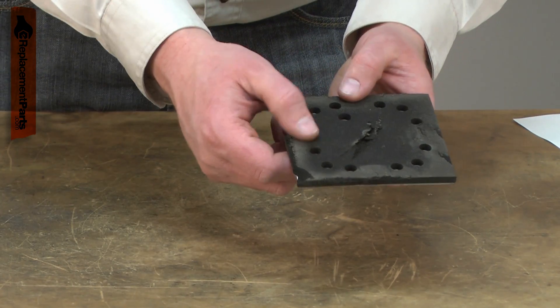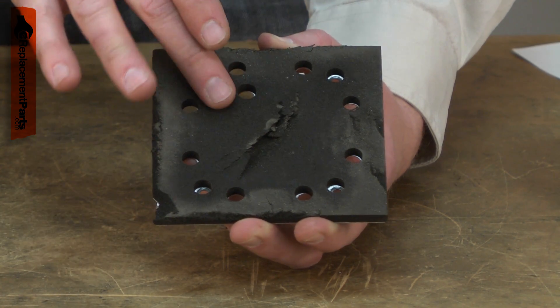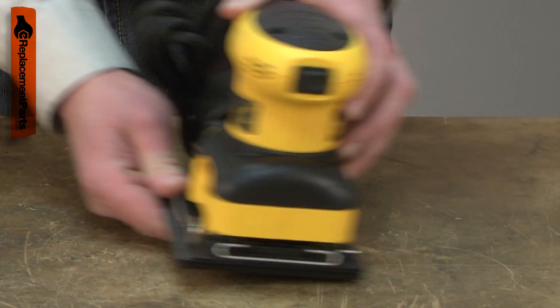Over time, the foam pad will begin to break down and wear. This can create areas of the pad that will sand more aggressively than others, leading to uneven sanding patterns, especially on softer woods.